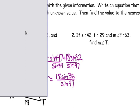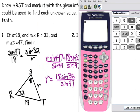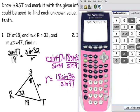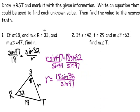In the calculator, type 18 times sine(32) — it is absolutely critical that you close those parentheses, otherwise you'll get the problem wrong — then divide by sine(47). Close those parentheses too, though it's optional. Hit enter and you find that r is approximately 13.04. The directions say to round to the nearest tenth, so r ≈ 13.0.